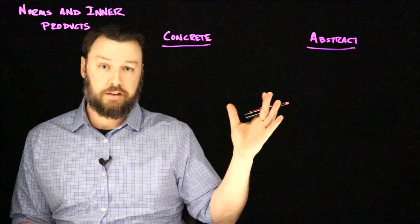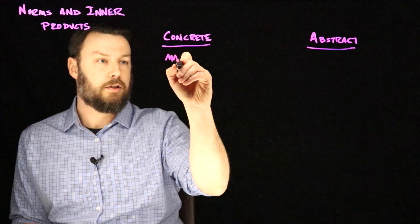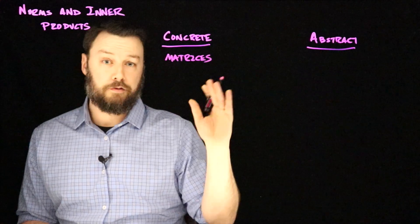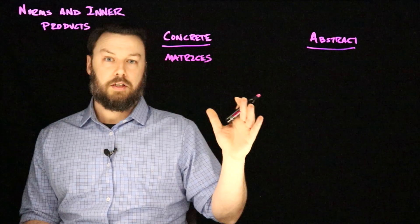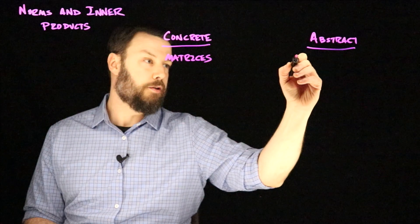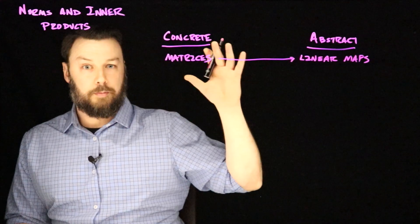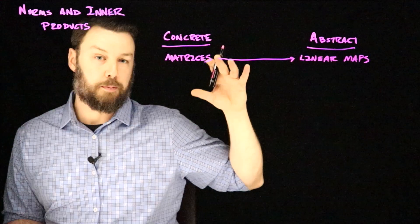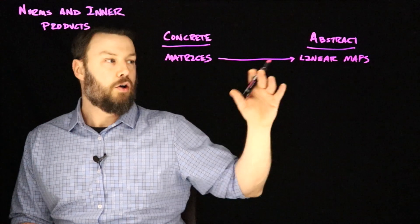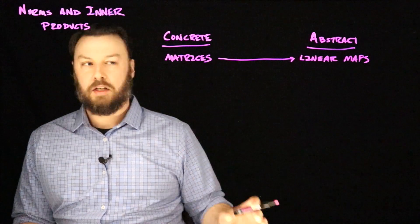The first connection is matrices. We have some intuition for matrices, and then we talk about linear maps as the abstraction of those ideas. You can think of matrices as a particular way to think about some kinds of linear maps, or you can think of linear maps as being the generalization of the idea of a matrix.